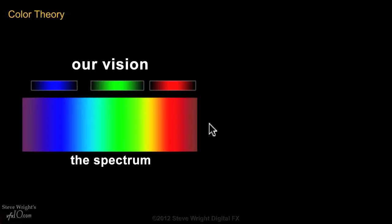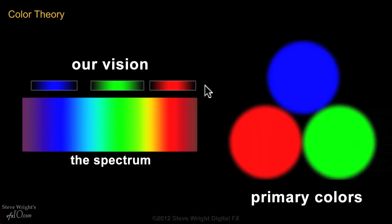In point of physical fact, our visual system only really detects three basic frequencies of light — those in the blue, the greens, and the reds.